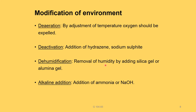Third, dehumidification — removal of humidity surrounding iron by adding silica gel or alumina gel prevents corrosion. Fourth, alkaline addition — iron corrodes more easily in acidic media, so adding ammonia or NaOH creates a basic medium surrounding the iron, preventing corrosion.